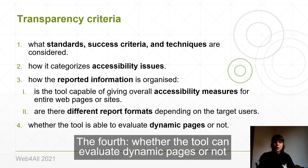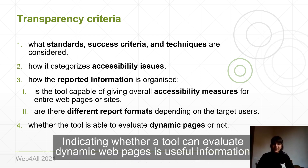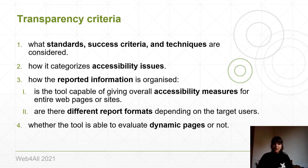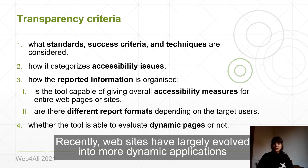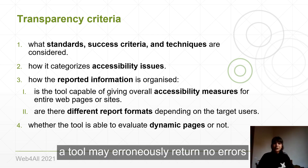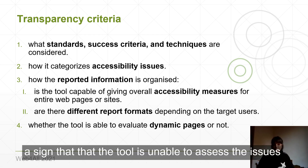The fourth criterion is whether the tool can evaluate dynamic pages or not. Indicating whether a tool can evaluate dynamic pages is useful information that can help users interpret their results properly. Recently, websites have largely evolved into more dynamic applications. By evaluating only the static HTML composing a modern web application, a tool may erroneously return no errors, signaling that the tool is unable to assess the issue.